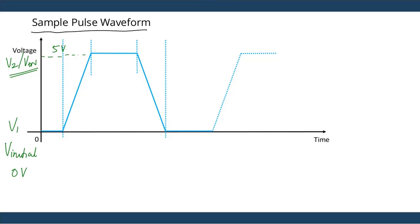The next parameter is called TR or the rise time. The rise time is the amount of time it takes a waveform to go from its zero percent voltage value — which is zero volts in our case — to its hundred percent voltage value, which is five volts in our case.